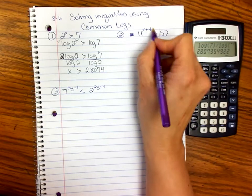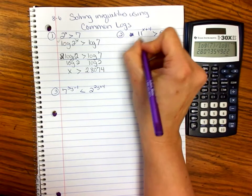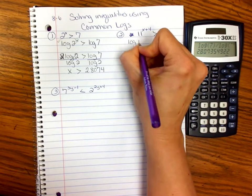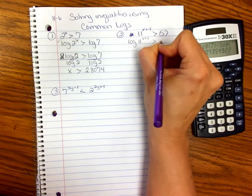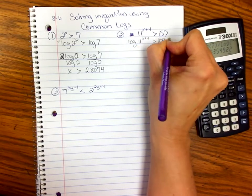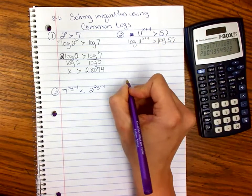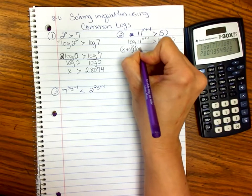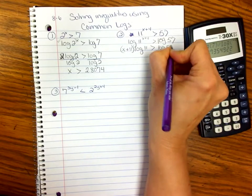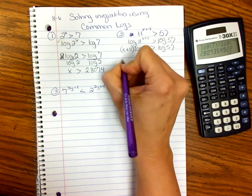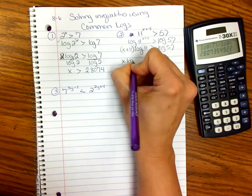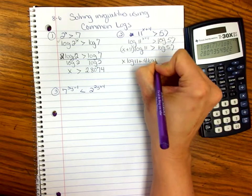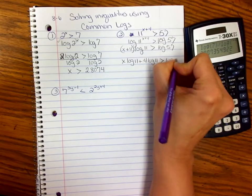On to the next one. It's a binomial exponent, so when we bring it down, we have to remember to distribute. We get log(11^(x+4)) > log(57). Using our properties, we bring that x+4 in front.